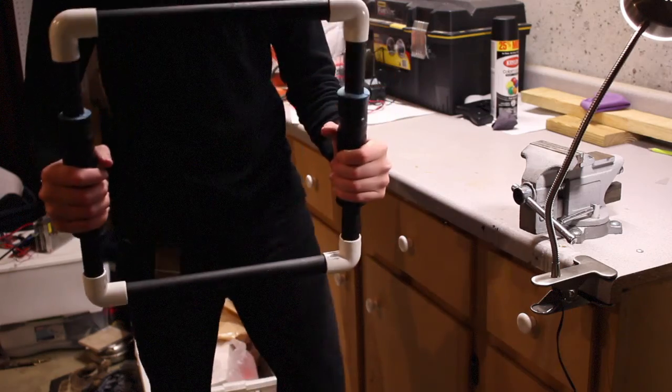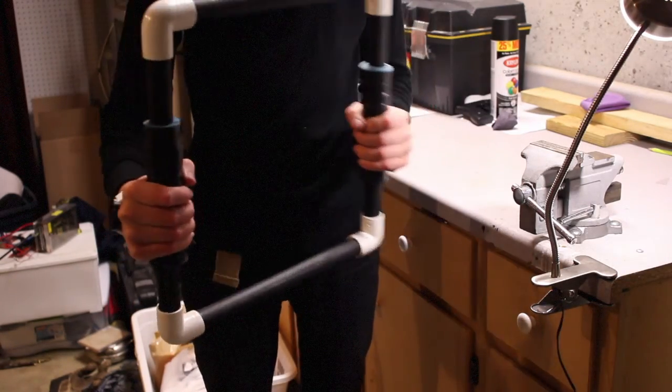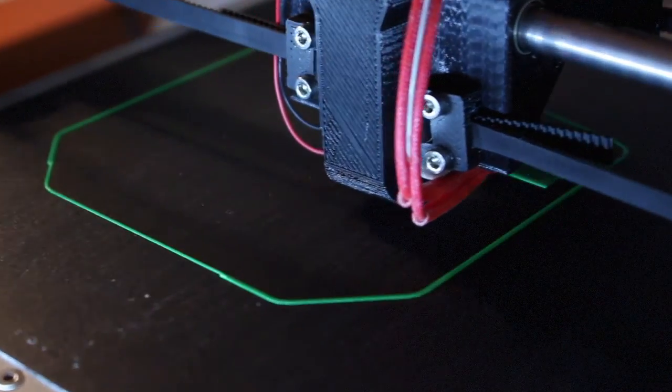So now that we have the main body of our camera rig, we just need to figure out a way to attach the DSLR to the rig. And for that, I've 3D printed this handy dandy little piece I've designed.